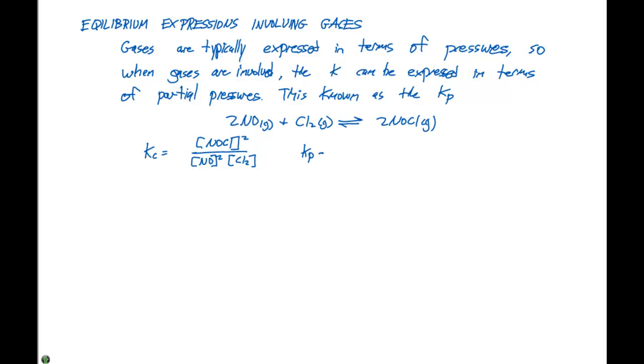Our Kp expression we can write as instead of the concentration of NOCl, the partial pressure of NOCl, that quantity squared, divided by the partial pressure of NO, also squared, times the partial pressure of Cl2.